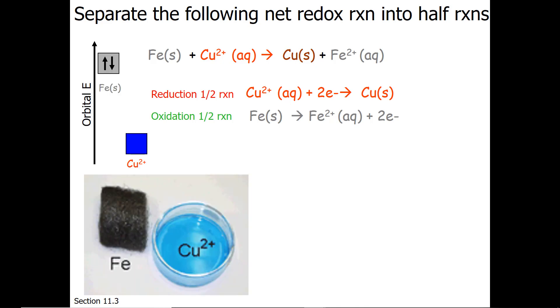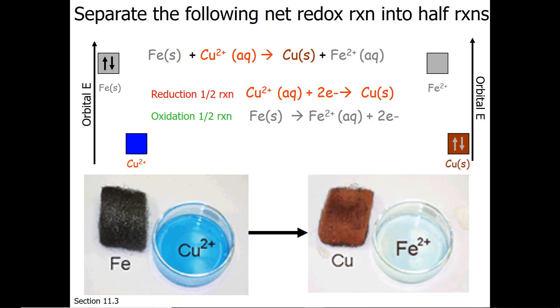This reaction is spontaneous. Iron has high energy electrons that go to the low energy vacancies that copper 2+ has. So when we're done with the reaction, the electrons now belong to the copper, and our solution is full of iron 2+.